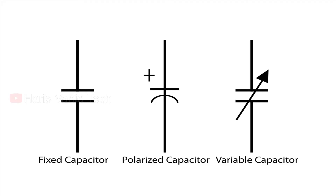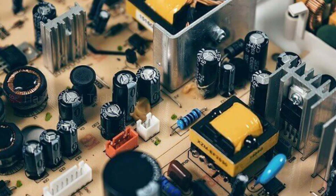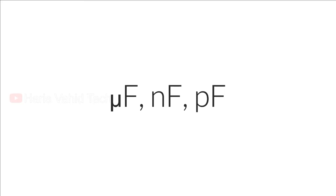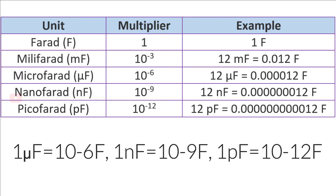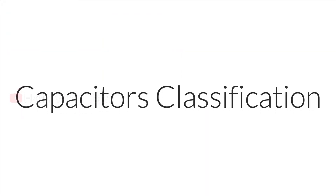When talking about capacitance, it's always positive in value and has no negative units. The farad is a very large unit of measurement, so submultiples are generally used such as microfarad, nanofarad, and picofarad. One microfarad equals 10 to the minus 6 farads, one nanofarad equals 10 to the minus 9 farads, and one picofarad equals 10 to the minus 12 farads. With this conversion table we can easily convert between pico, nano, micro, and farads.